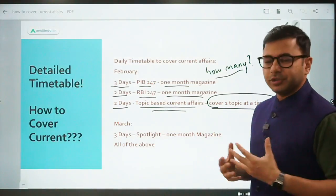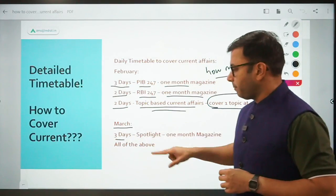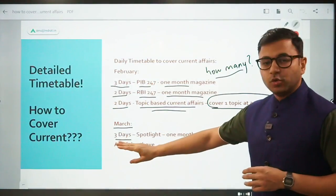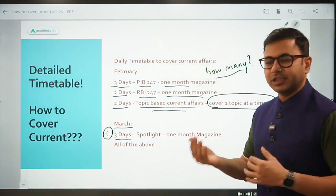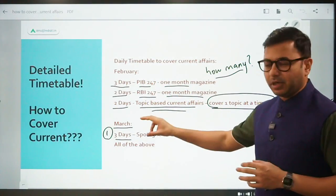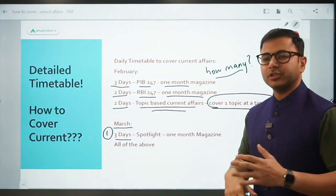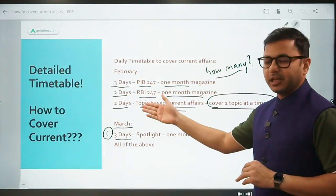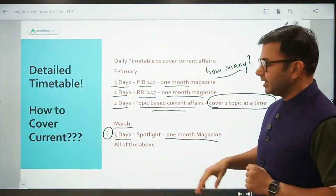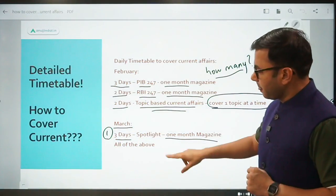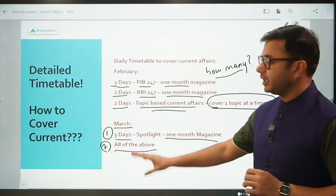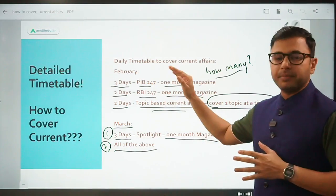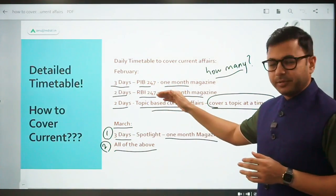In March, because the examination is expected somewhere in April, instead of spending more time on covering PIB 247, RBI 247 and topic-based current affairs, you keep spotlight as your first priority. Your first priority shifts to spotlight in March if the examination is to be held in April. If the examination comes to be held in May, then automatically the timetable shifts and you keep covering these three current affairs before picking up spotlight. One month spotlight magazine takes a maximum of 3 days, and all the others are given 2nd, 3rd and 4th priority accordingly.